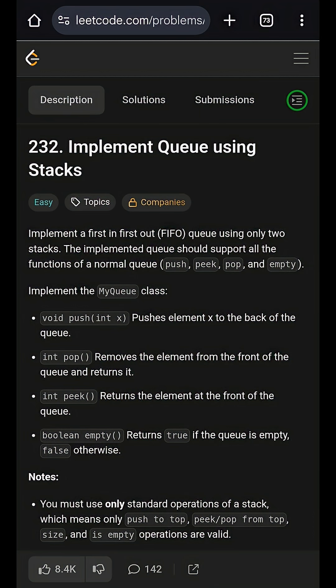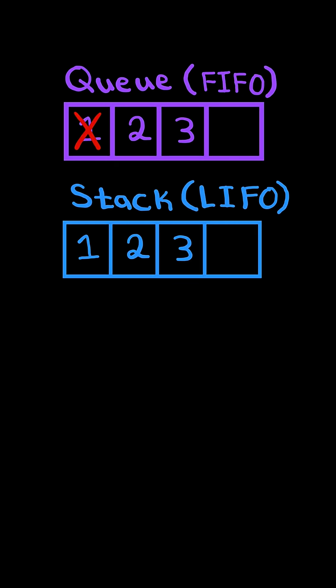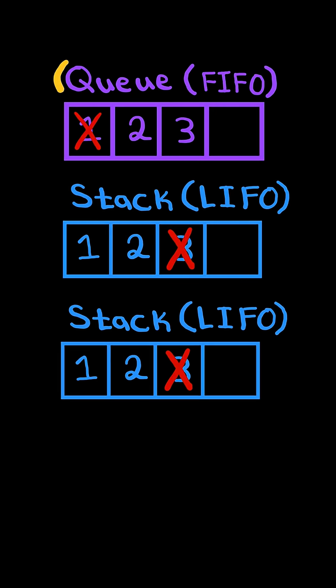Implement queue using stacks. A queue follows a first-in, first-out format, meaning elements added first are removed first. A stack follows a last-in, first-out format, meaning the last element added is the first one removed. In this problem, we must implement a queue data structure using two stacks.